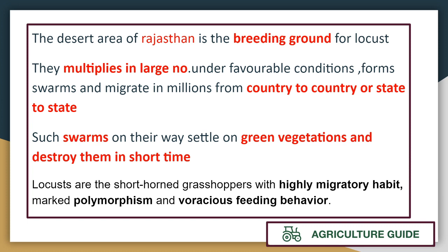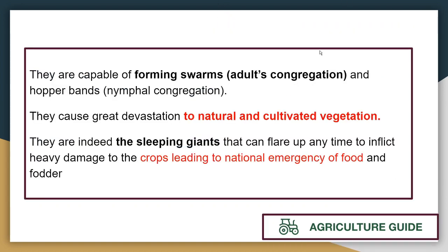Locusts are short-horned grasshoppers with highly migratory habits, polymorphic, and voracious feeding behavior — meaning they eat a lot. A locust can eat food equal to its own body weight at one time. Locusts damage both natural and cultivated vegetation. In severe conditions, a locust attack can lead to a national emergency.